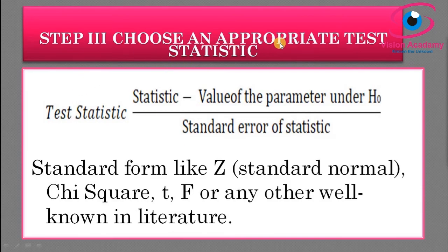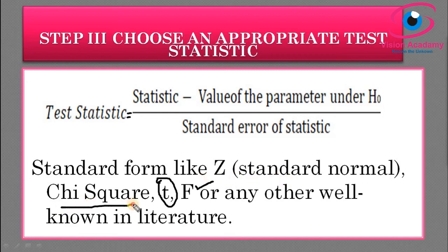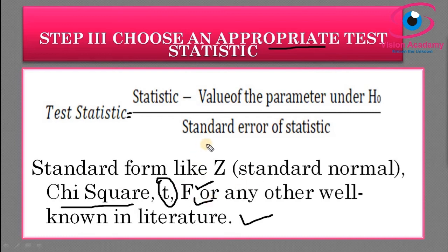After deciding alpha, the next step is to choose an appropriate test statistic. In parametric hypothesis testing, you decide which type of test to use based on the data and number of samples. If your sample size is less than 30, you go for the t-test; for larger samples, you use the z-test or F-test. There are standard forms of statistical tests such as the chi-square test, t-test, and F-test. You must choose the test appropriate for your problem, and also ensure your data is normally distributed.